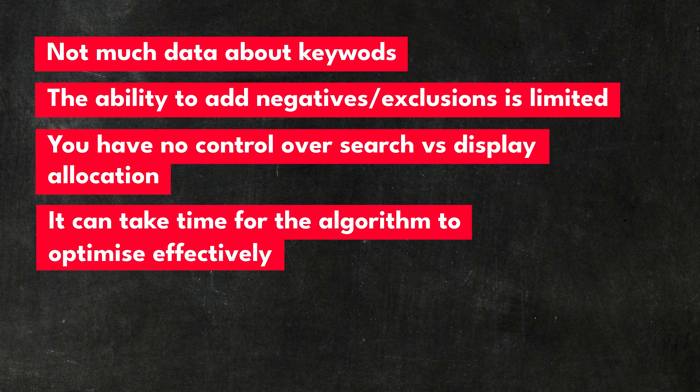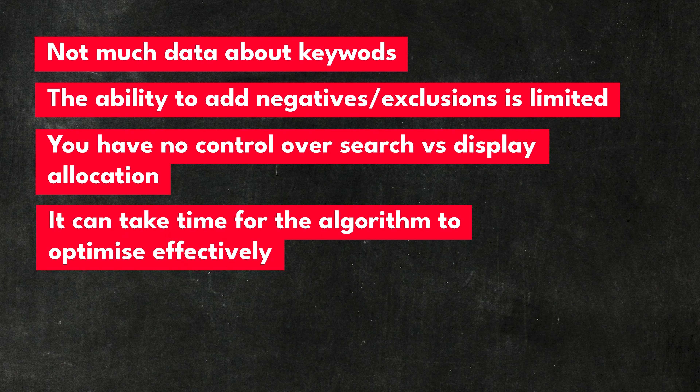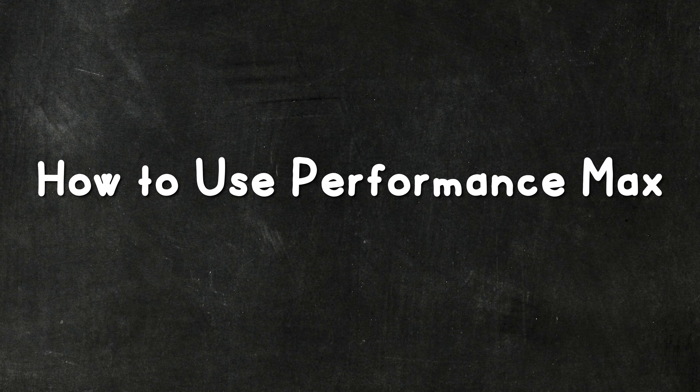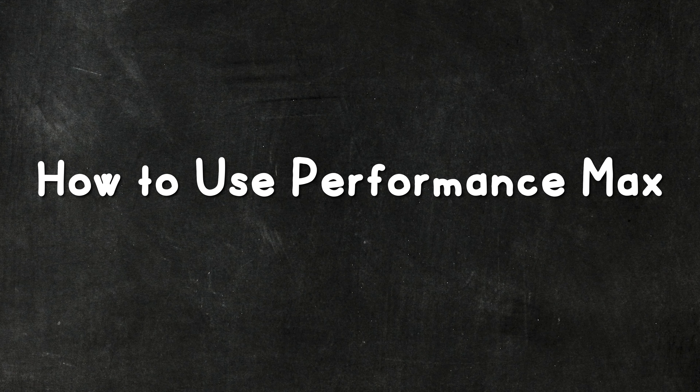The ability to target negatives or exclusions is also pretty limited compared to regular campaigns. For example, it's quite difficult to negatively target certain keywords. Let's say you didn't want your Pmax campaign to include branded traffic — that's really easy to do with a regular campaign, but with Pmax it's much more difficult. You may also not want to target certain demographics, but Pmax doesn't give you that level of granularity and control. You also have no control over the search versus display allocation. Search traffic is usually more valuable, but with Pmax you can't say 'I want more search and less display' — it's all up to the black box.